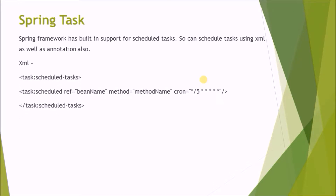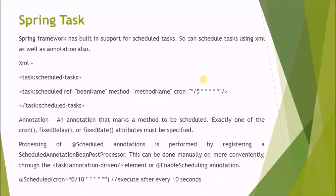Here is the syntax for XML. For annotation, it marks a method to be scheduled — exactly one of the cron, fixed delay, or fixed rate attributes must be specified. Processing of scheduled annotations is performed by registering a scheduled annotation bean post processor. This can be done manually, or more conveniently through the task annotation-driven element or the enable-scheduling annotation.